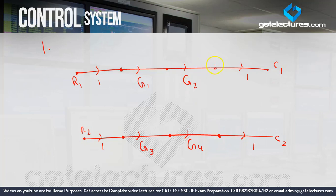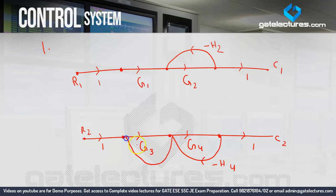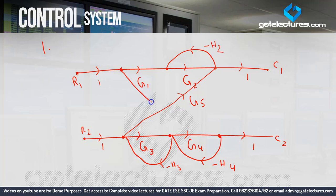There is a feedback path on the upper side with gain minus H2. There is also a feedback path with gain minus H4 and another feedback path with gain minus H3. There is a connection from one node to another with gain G6. This is my complete question.